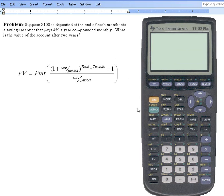So, here's the TI. Let me recall the problem. We had $100 that we're going to be placing into an account at the end of each month for two years, and it was going to be paying 4% a year compounded monthly.